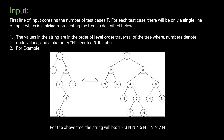The input format is as follows: the first line contains the number of test cases T, and for each test case there will be a single line of input which is a string representation of the tree. The tree is represented in level-order traversal, and 'N' denotes the null child.